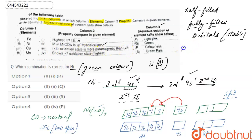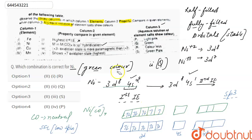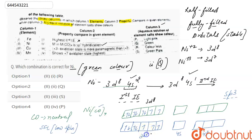Next: nickel in +3 oxidation state is more paramagnetic than +2. Nickel in +2 state is 3d⁸, and in +3 state it is 3d⁷. In 3d⁷ we have three unpaired electrons, and in 3d⁸ we have two unpaired electrons. So the statement that +3 oxidation state is more paramagnetic than +2 is correct.